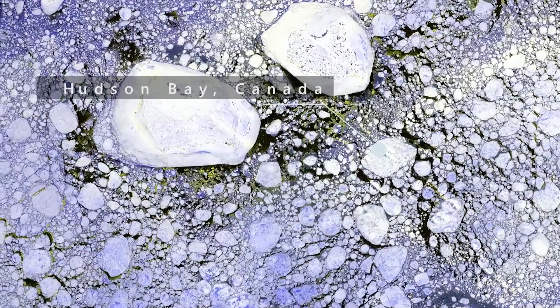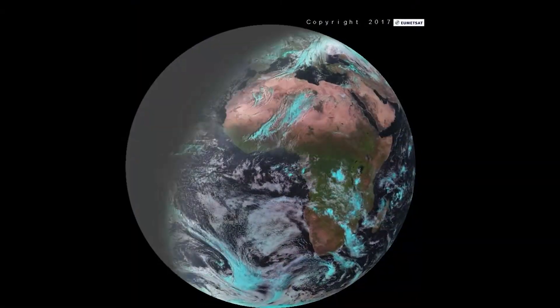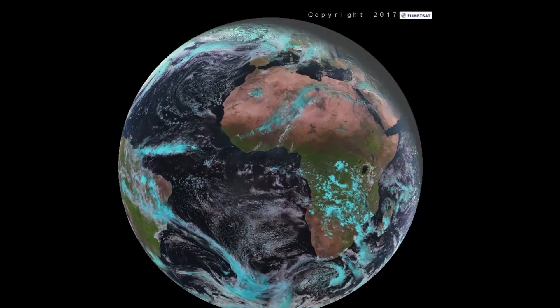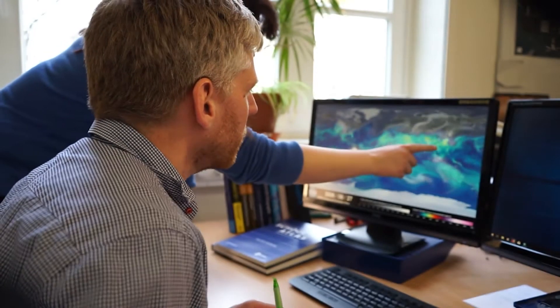Images from space show our planet from new perspectives and sometimes in the most unusual colors. They're not only nice to look at, but they also supply map and weather services with up-to-date data, and they are a crucial tool for the scientific exploration of planet Earth.